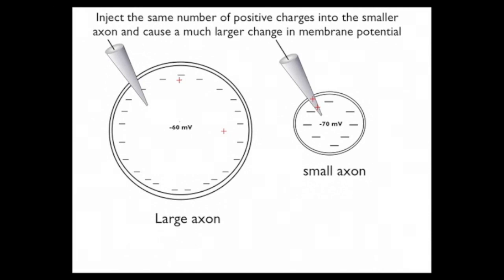Now, here's the point. I can inject exactly the same number of positive charges into the small axon, but the small axon has a smaller number of negative charges on the inside because it has a smaller capacity.